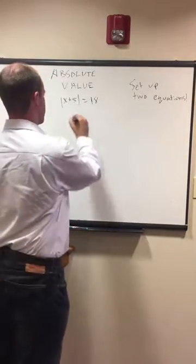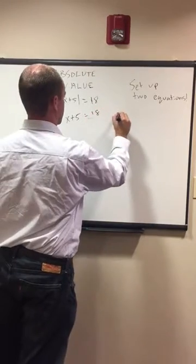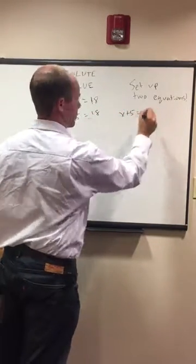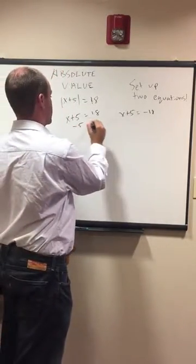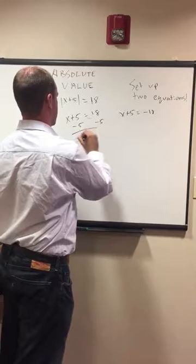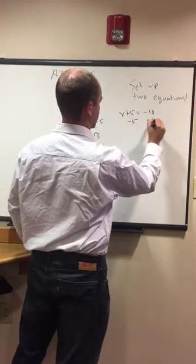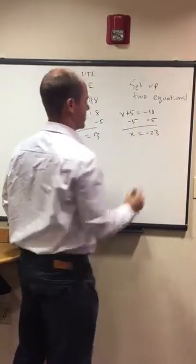We want to set up two equations. One should be positive, one should be negative, and then we just solve. Minus 5, x equals 13. Minus 5, x equals negative 23, and those are our two solutions.